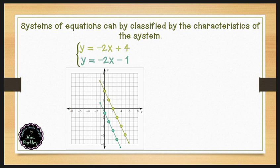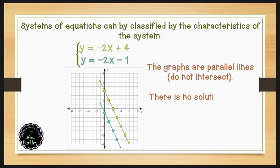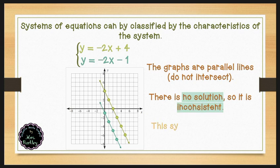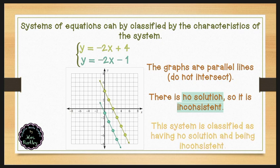After graphing the system, we should recognize that the graphs are parallel lines, which means that they do not intersect. When we have parallel lines that don't intersect, we say that there is no solution, and we classify that as being inconsistent. Notice that parallel lines have the same slope — both have a slope of negative 2 — and different y-intercepts: positive 4 for the first equation and negative 1 for the second.